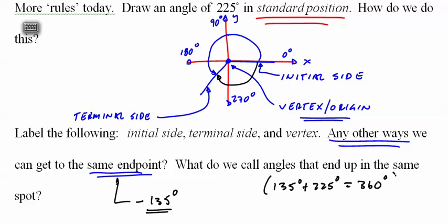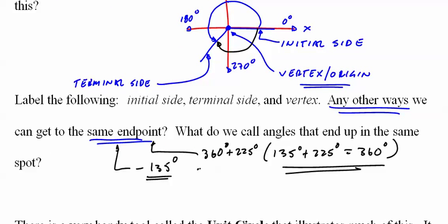And how do we know that? Because 135 degrees plus 225 degrees equals 360 degrees. We could go around twice - go 360 plus 225, which would get us to 585 degrees.